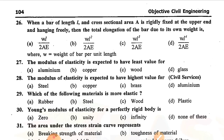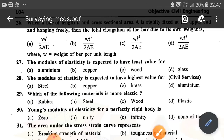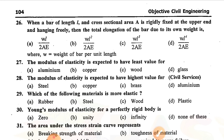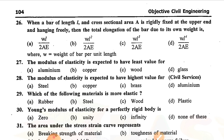Question number twenty-six: When a bar of length L and cross-sectional area A is rigidly fixed at the upper end and hanging freely, the total elongation of the bar due to its own weight is — option B is correct — ρL²/(2AE). Question number twenty-seven: The modulus of elasticity is expected to have the least value for — option C is correct — wood. Question number twenty-eight: The modulus of elasticity is expected to have the highest value for — option A is correct — steel. Question number twenty-nine: Which of the following materials is more elastic? — option B is correct — steel.